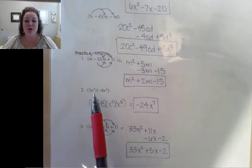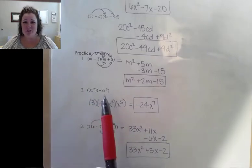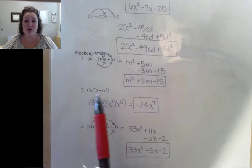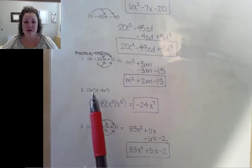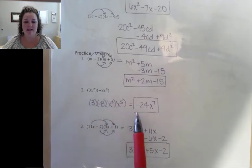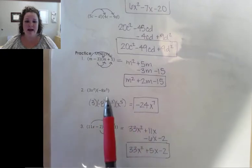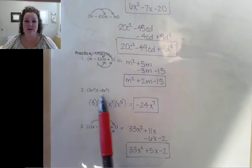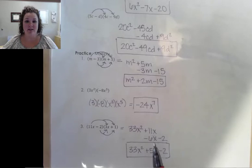Number two is just a monomial times a monomial. So there's nothing really to distribute. We're just multiplying terms, just like we did when we did our exponent rules. So we multiply the number parts with the number parts. We're going to multiply the 3 and the negative 8 to get negative 24. And then we just multiply the x parts together. So x squared times x to the 5th gives me x to the 7th.